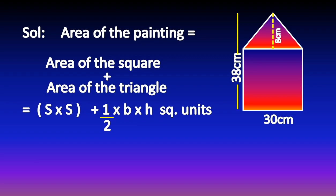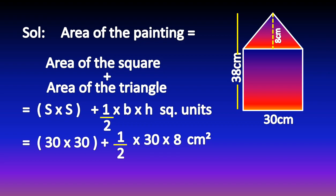So it is equal to S × S plus half × B × H square units. Here, side equals 30 cm, so: 30 × 30 plus half × 30 × 8 cm². Now let us simplify.